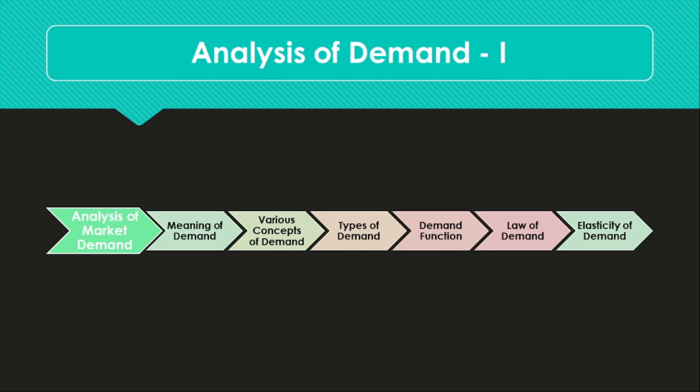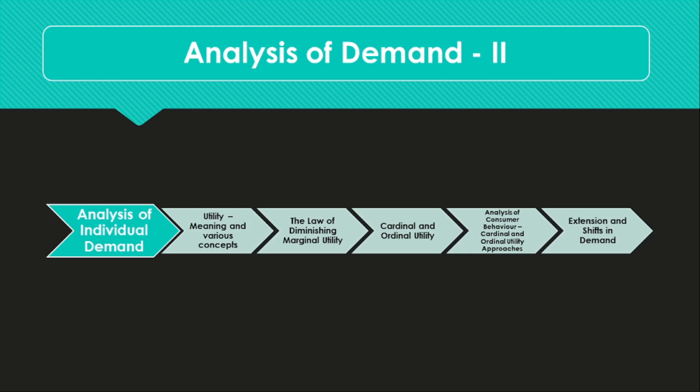The second part of the chapter covers the analysis of individual demand, which comes from consumer behavior. This part will cover theories and concepts of consumer behavior, including utility and its meaning, various concepts of utility such as marginal utility, total utility, the law of diminishing marginal utility, and cardinal and ordinal utility concepts.